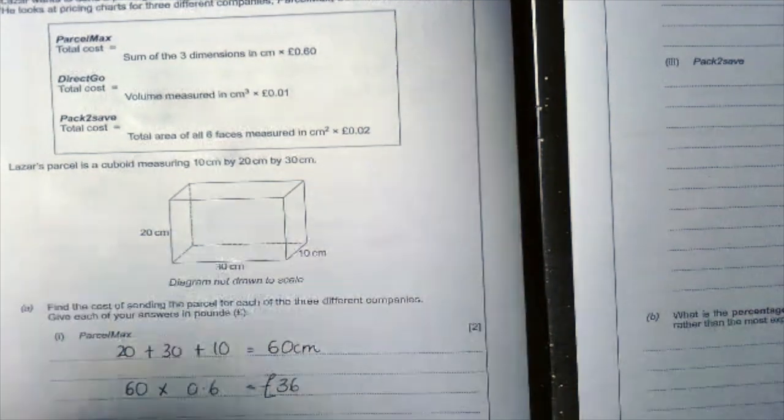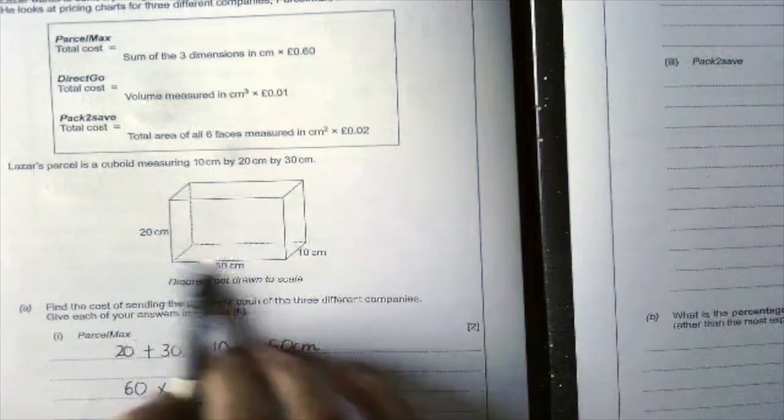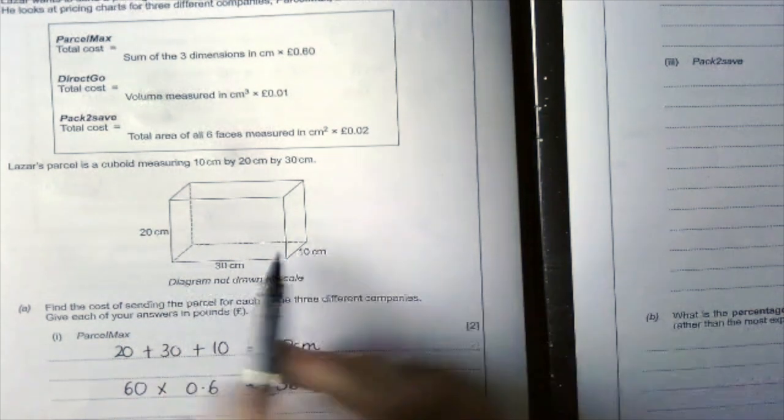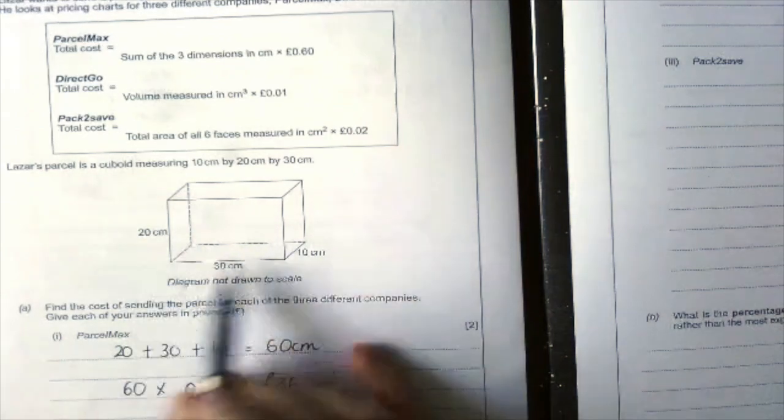So we have to work out each face separately. You've got two 30 by 20s, you've got two 10 by 20s, and you've got two 30 by 10s.